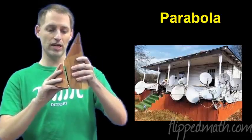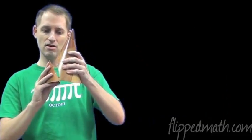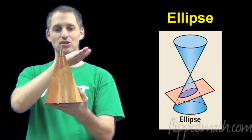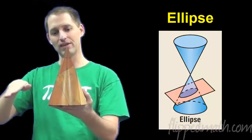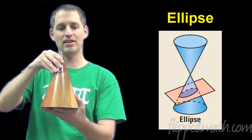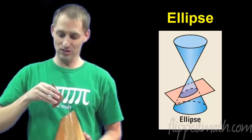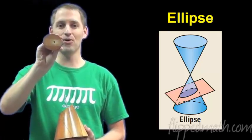Then the next thing we'll look at is called ellipses. Where you slice the cone at an angle like this, not through the base but just at an angle. Then you take that thing off and it looks like an ellipse right there.